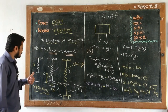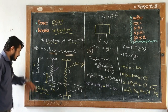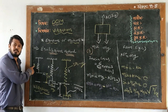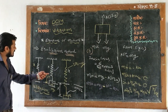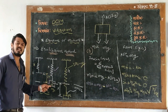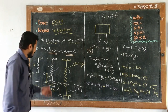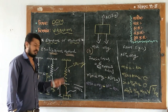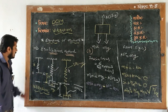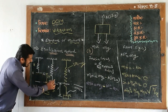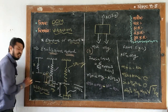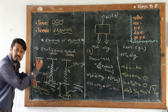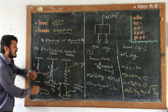Dear students, first we are going through this figure. This is the basic figure of a spring-mass system. In the first figure, it is a free spring with stiffness k. In the second figure, it is the same spring with stiffness k, but we are attaching an amount of mass m here. After attaching mass m, the spring deflects downward by an amount delta_st.